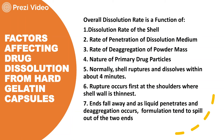Dissolution from soft or hard gelatin capsules is a function of the dissolution rate of the shell — how hard the shell is and what the plasticizer content is — as well as the integrity of the shell. The shell must break down quickly so the encapsulated mass contacts the gastrointestinal fluid. The rate of penetration of the dissolution medium, de-aggregation of the powder mass, and the nature of the drug substance all determine the dissolution rate. Normally, the shell ruptures and dissolves within about four minutes, first at the shoulders where the shell wall is thinnest.